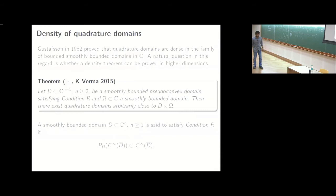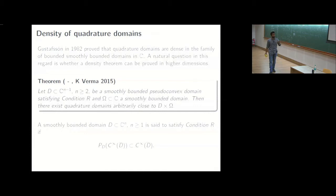I'd like to focus however on a density theorem which is a generalization of what was done in the planar case. So the right class of domains that was conjectured where a density theorem would work was domains which satisfy condition r which I have quickly recalled here. A domain is said to satisfy condition r if the Bergman projection preserves the space C infinity of t bar. So we will consider only those domains which are of the type d cross omega, where d is in cn-1, a smoothly bounded pseudo convex domain which satisfies condition r and omega is a smoothly bounded domain which naturally satisfies condition r. So then the statement is that there exist quadrature domains arbitrarily close to d cross omega.